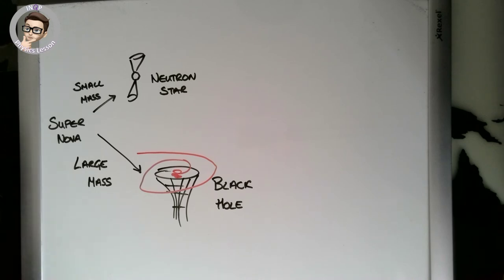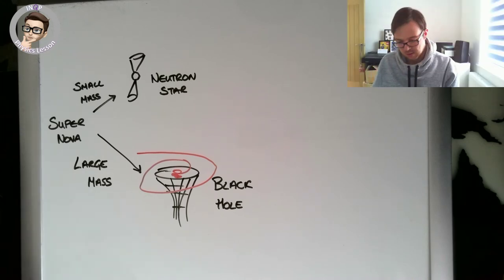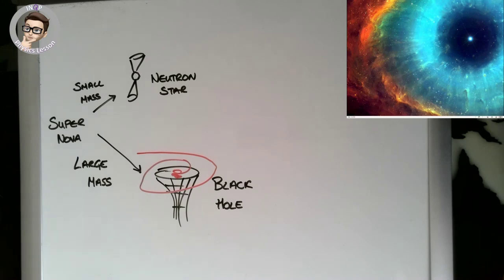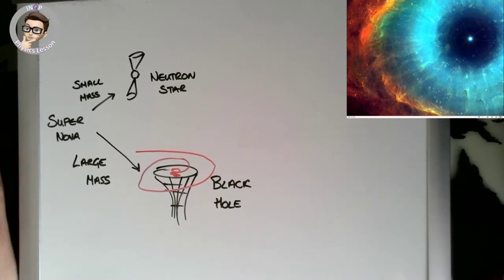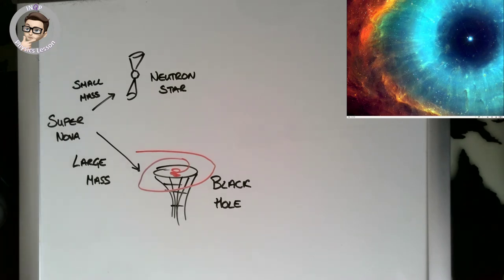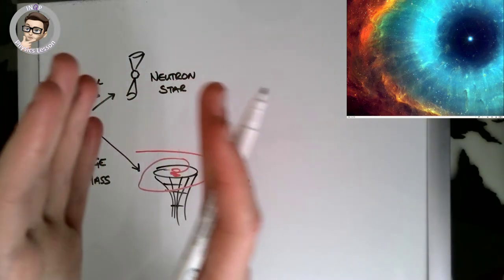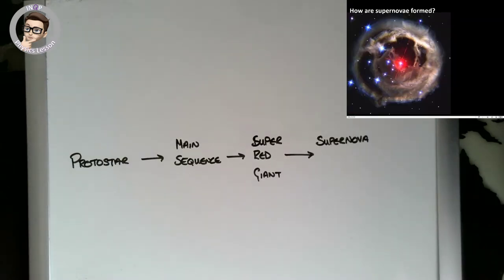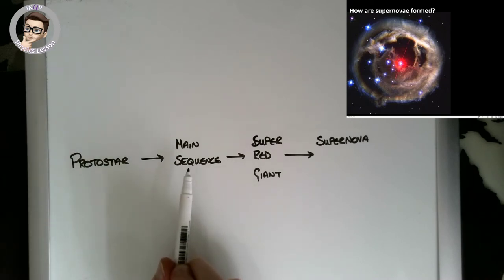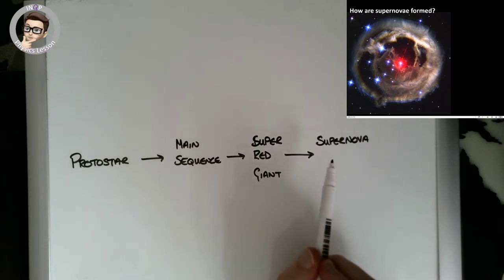Here's a picture of a supernova — possibly an artist's impression — showing the core in the center and the edges moving away after having collapsed inward and rebounded off that core.